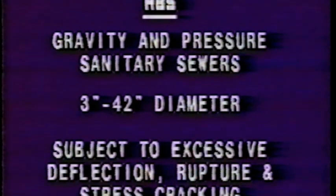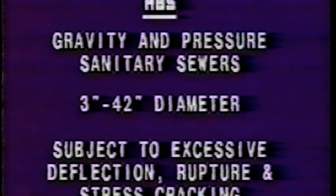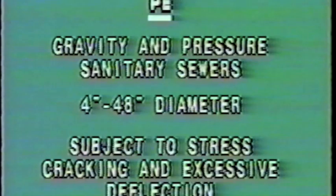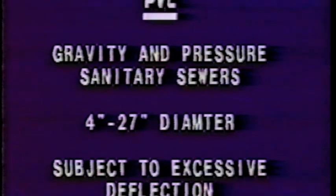ABS usually runs from 3 to 42 inches in diameter and is subject to stress cracking, excessive deflection, and rupture when improperly bedded. PE normally runs from 4 to 48 inches in diameter and is subject to stress cracking and excessive deflection. PVC runs between 4 to 27 inches in diameter and, like the others, it's subject to excessive deflection.